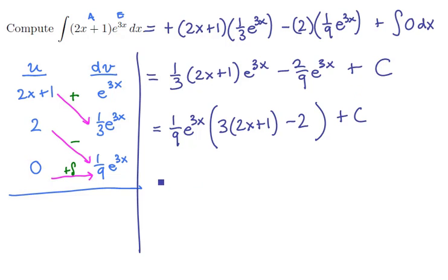And then, once again, we can distribute that through to get 1 ninth e to the 3x times 6x plus 3 minus 2.